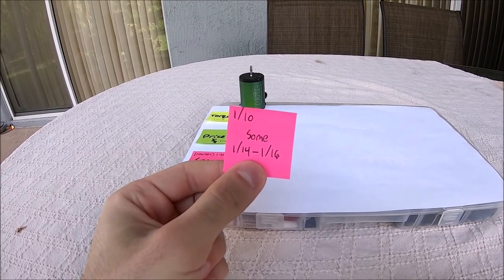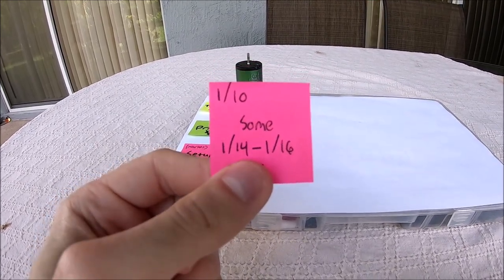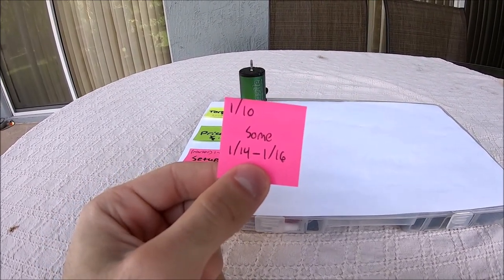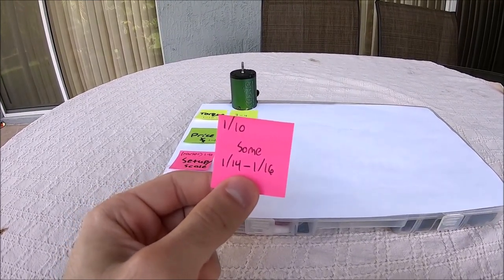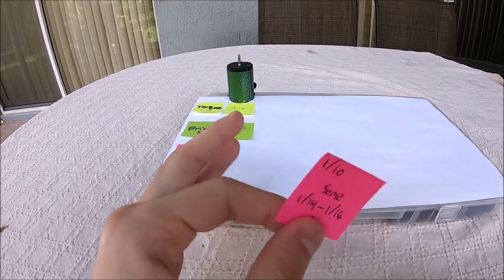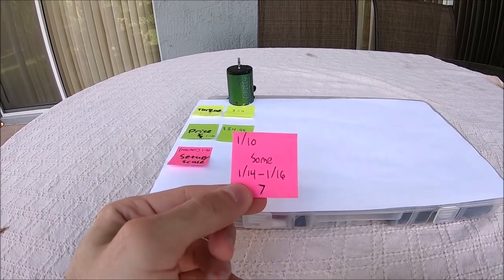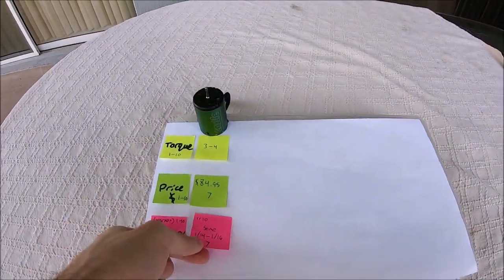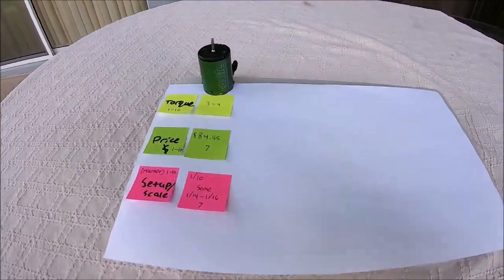The market that this motor is going to fall under is mostly 1/10 scales and some 1/14 and 1/16 scales - 1/14 scales being your Losi Mini series and your Traxxas 1/16 scales. Pretty much a lot of people will run the 3800 KV as a big block upgrade for those smaller cars, so we're going to be going with the number 7 on this one. Pretty solid score, but it's still nowhere near to where a couple of those guys stack up.